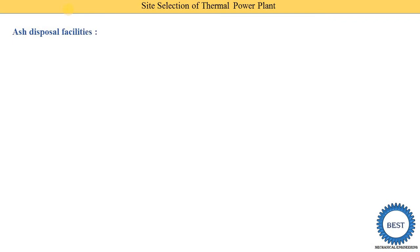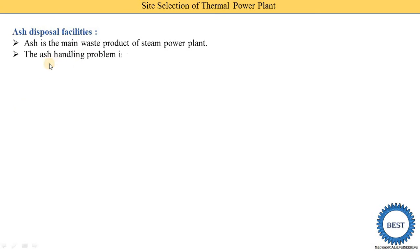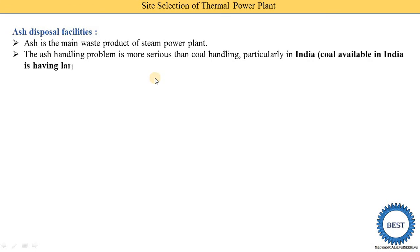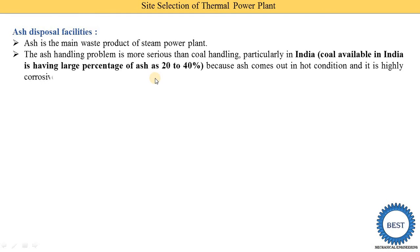Next point is ash disposal facilities. Ash is the main waste product of a steam power plant. The ash handling problem is more serious than coal handling. In India, coal has a large percentage of ash — 20 to 40 percent — meaning if we burn 100 kg of coal, 20 to 40 kg of ash is produced. Ash comes out in a hot condition and it is highly corrosive, making ash handling more difficult than coal handling, which is at normal atmospheric temperature.